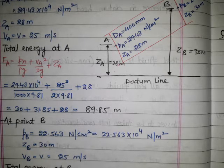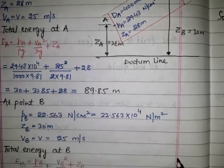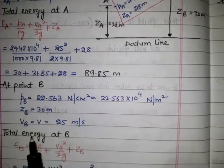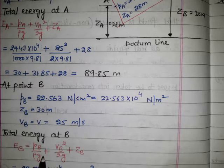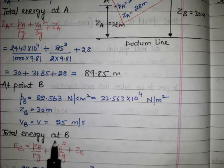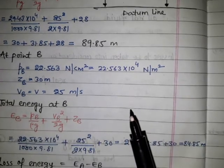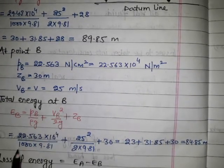V_B equals V, which is 25 meters per second. For total energy at B, again applying Bernoulli's equation: P_B over ρg plus V_B squared over 2g plus Z_B. Substituting the values for these parameters...